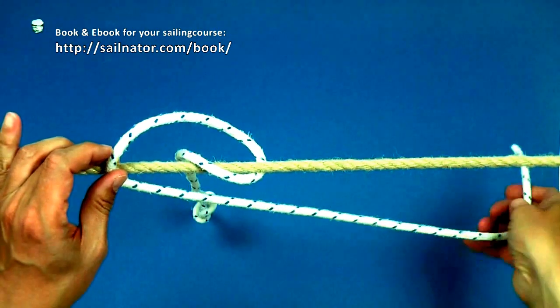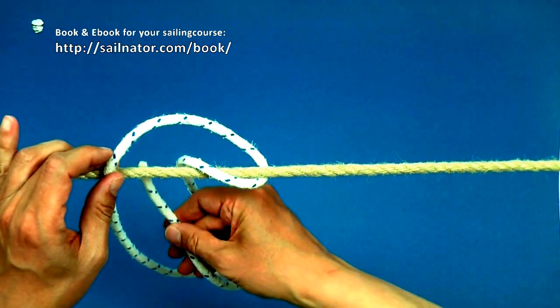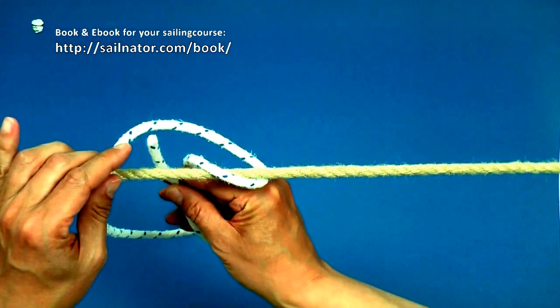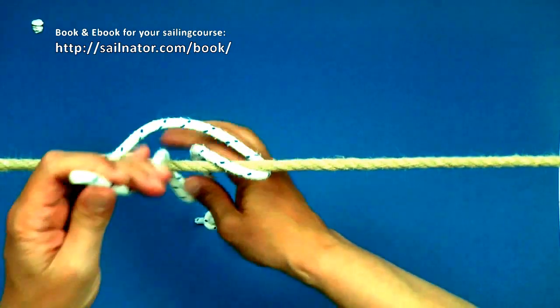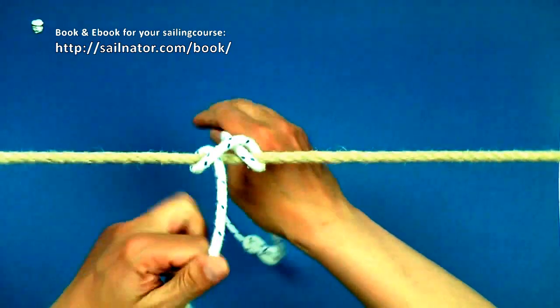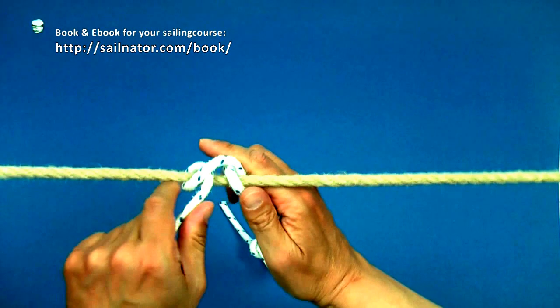Now I stick the end of the line through this loop from below with the right hand and pull both parts of the line. Now the clove hitch is finished.